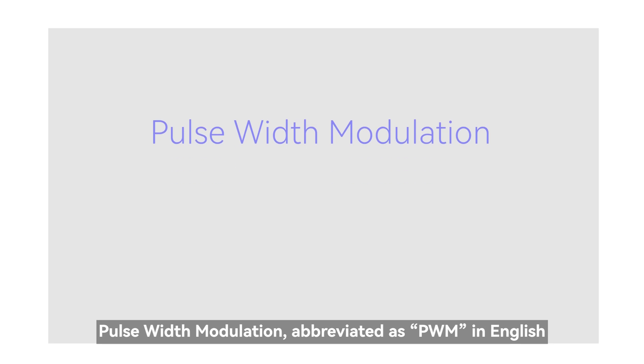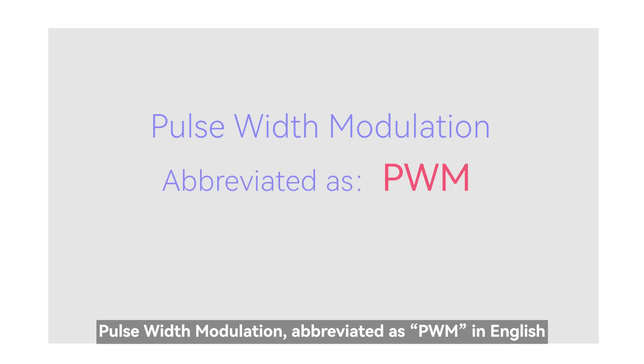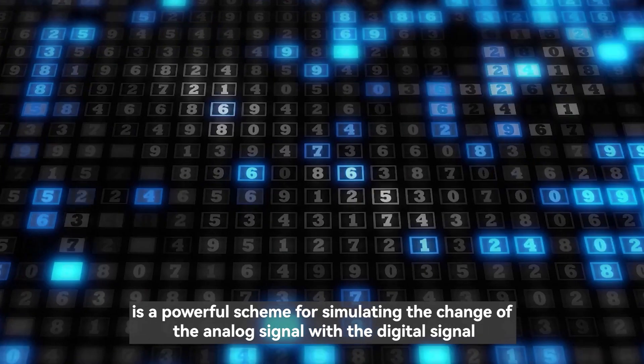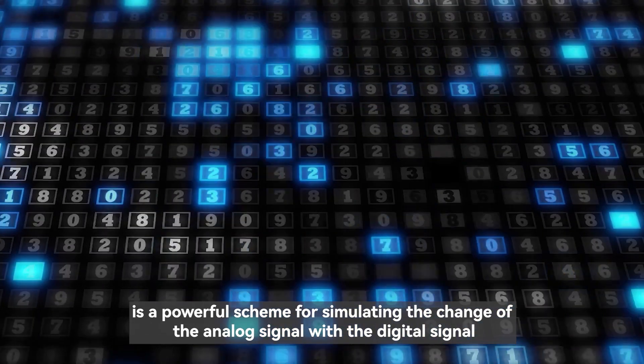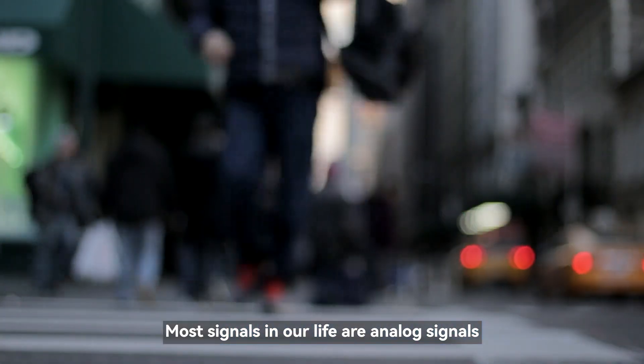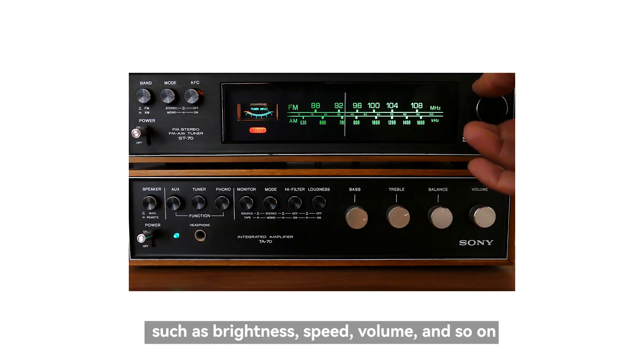Pulse Width Modulation, abbreviated as PWM, is a powerful scheme for simulating the change of analog signals with digital signals. Most signals in our life are analog signals, such as brightness, speed, volume, and so on.